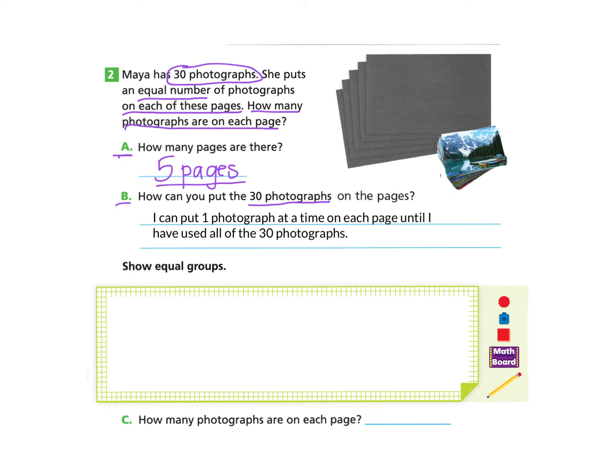Now we get to do what I think is the fun part. We get to show the equal groups. So if you would like to pause and try this on your own and come back, you may or follow along with me. My first step is to create five squares that represent the five pages. Then like my plan explains, I'm going to put one photograph at a time on each page until I have used all of the 30 photographs. So you can push pause and try this on your own if you'd like or follow along.